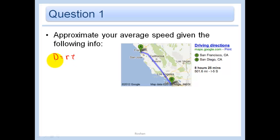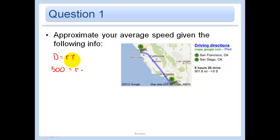So your distance — we're approximating — we went 501.6 miles, that's about 500. Our rate is what we're trying to find. And the time, we went 8 hours and 25 minutes. Again, we're doing an approximation, so let's just round that to 8.5 hours.